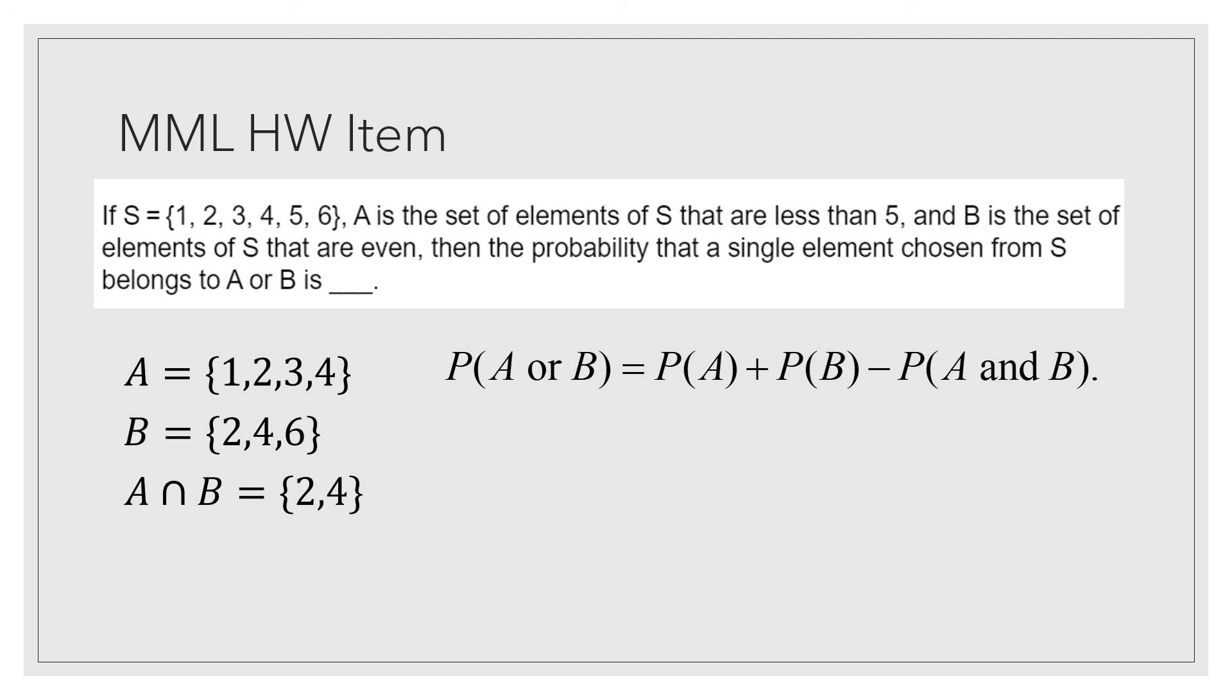Probability of A, we're going to take 4 and divide it by 6. Probability of B, 3 sixths, and probability of both is 2 sixths. 4 sixths plus 3 sixths minus 2 sixths is going to give you 5 sixths.